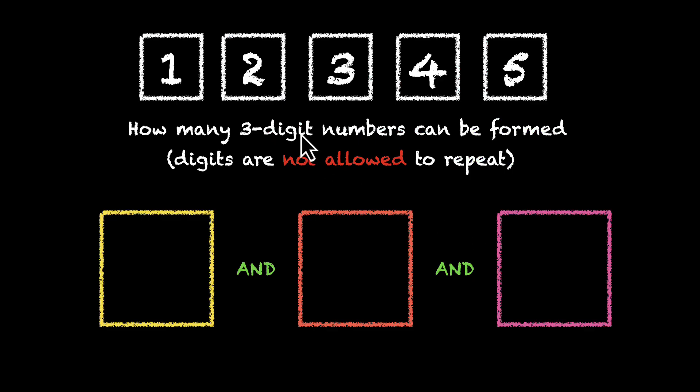Alright, let's get back to our problem. So we have these 5 digits, we're making a 3 digit number. And to do that, we're doing this, AND this, AND this. Now if you want to try it yourself, pause the video, give it a shot.